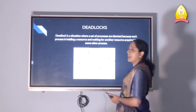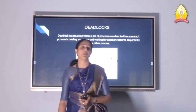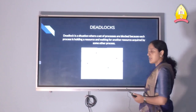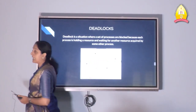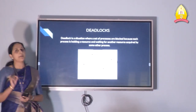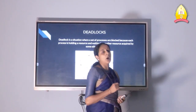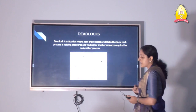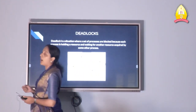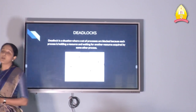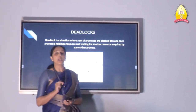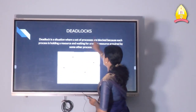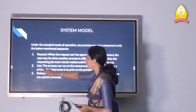We know that a system consists of a finite number of resources — CPU, memory, and IO devices. Resources may have some number of identical instances. For example, if a system has two CPUs, we can say that our system has two instances of CPUs. Similarly, if a system has three printers, we can say that our system has three instances of printers. Processes utilize resources only in a particular sequence: request, use, and release.